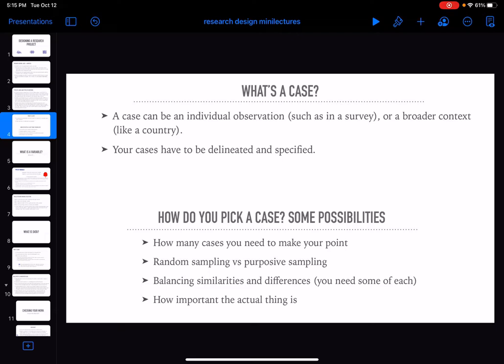The first is when you hear someone talk about a small n or a large n case study. Well, in that case n is the number of observations usually, and so an n can be a whole country. So for instance, there's a classic work in comparative politics, Theda Skocpol's States and Social Revolutions, and she's got an n of three in that her three cases are the French Revolution, the Russian Revolution, and the Chinese Revolution.